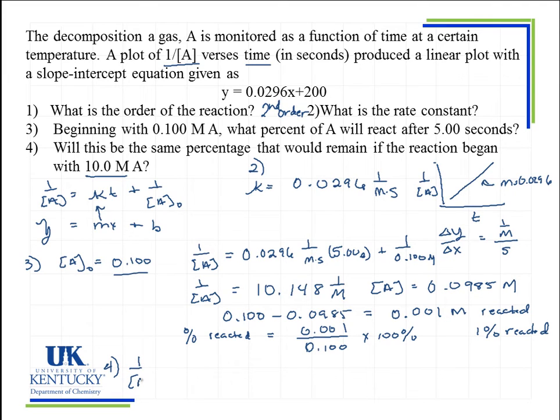Let's figure out the amount of A that would remain if we started with a different quantity. Now, the rate constant is not going to change, and the time isn't changing, but what is changing is this number here. We're going to start with 10 molar or 10.0 molar. Now, when you multiply that out and solve for 1 over A, you get a very different number here, and you get 0.248.